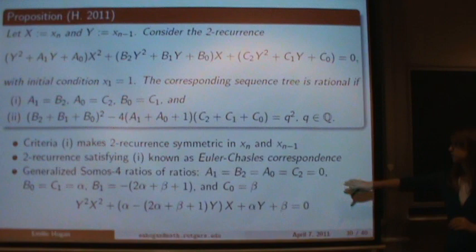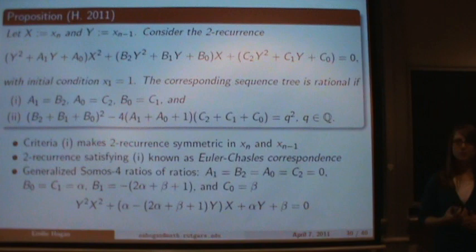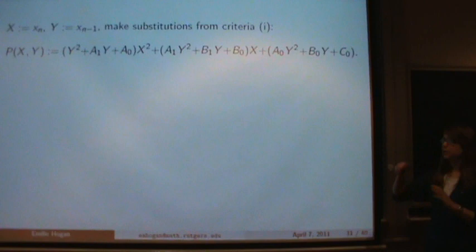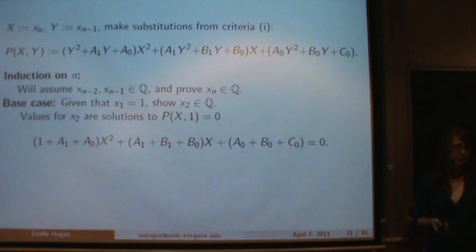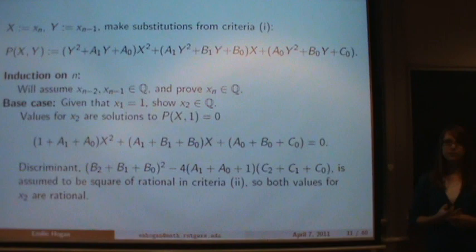The SOMOS 4 recurrence is a special case with these substitutions, and it does satisfy criterion 1: a_1 and b_2 are equal, a_0 and c_2 are equal, and b_0 and c_1 are equal. The second criterion is that a certain quantity is a square of a rational number, which holds as long as alpha and beta are rational. Now let me prove why this is true. We proceed by induction on n, assuming x_{n-2} and x_{n-1} are rational and proving x_n is rational. The base case: X_1 is given as 1, and X_2 is a solution to a quadratic whose discriminant is exactly the second criterion—assumed to be a rational square—so the solutions are rational.